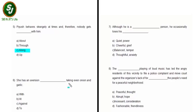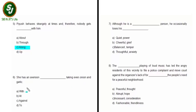The next question is: 'She has an aversion ___ taking even onion and garlic.' Aversion means a strong dislike for something. Options: with, at, against, to. 'With taking even onion and garlic' — no. 'At taking' — no. 'Against taking' — no. 'To taking' — she has an aversion to taking even onion and garlic: this is the perfect word. Option D is the right answer. The statement is: 'She has an aversion to taking even onion and garlic.'